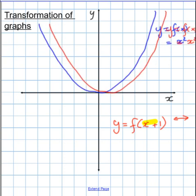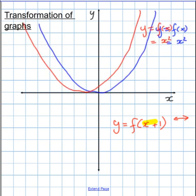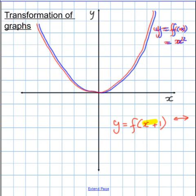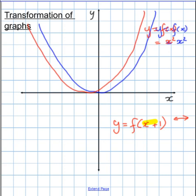Now one would have thought it'd be one unit to the right. No, not inside the bracket, it acts counter-intuitively. So you shift, a plus one means one to the left. So that would be our new graph.